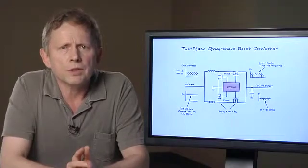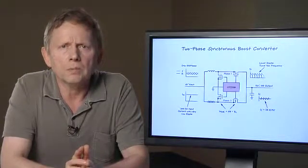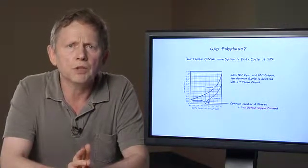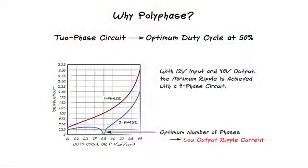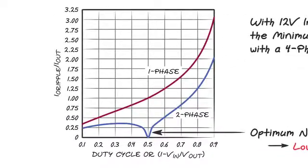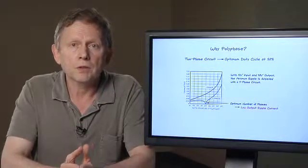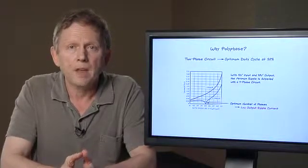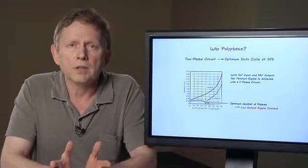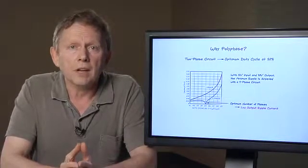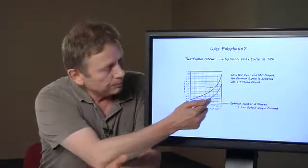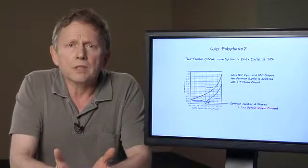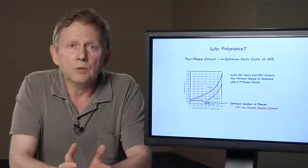The next graph illustrates what is happening with the output ripple current as we change the input voltage and duty cycle. A two-phase boost converter has lowest ripple current at 50% duty cycle. Therefore, a two-phase converter is ideal for boosting 6V to 12V or for boosting 12V to 24V output. However, to boost 12V to 48V, we would need 75% duty cycle and ripple currents go back up. In order to bring the ripple currents down again, we would need to use a four-phase converter.